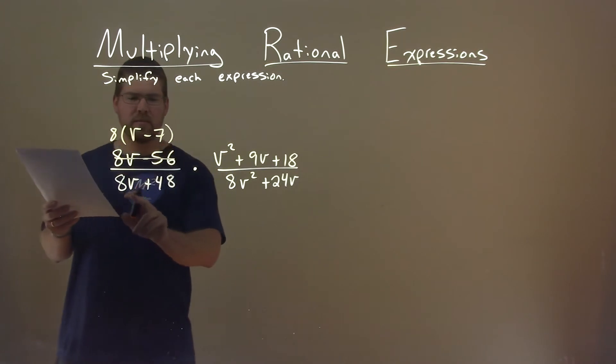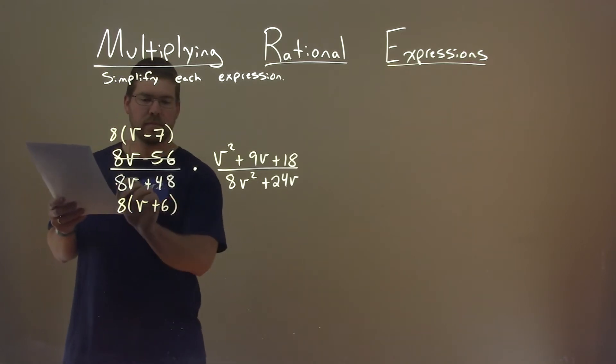Denominator the same thing, 8 goes into 48. So if I pull out an 8, I'm left with v plus 6. So we replace it.